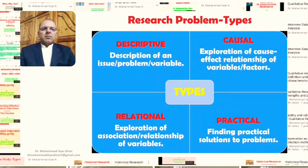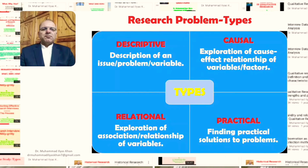The different types of research problem include four main types. A research problem could be descriptive, relational, causal, or practical. A descriptive problem is based on description of an issue, problem, or variable. The relational one is aimed at exploration of association or relationship of variables. The causal type is aimed at exploration of cause-effect relationships of variables or factors. And the practical, as the name suggests, is aimed at finding practical solutions to our problems as practitioners.